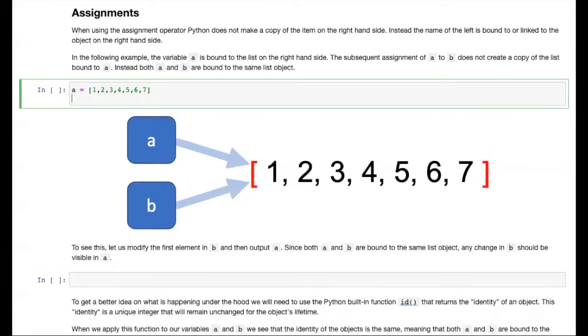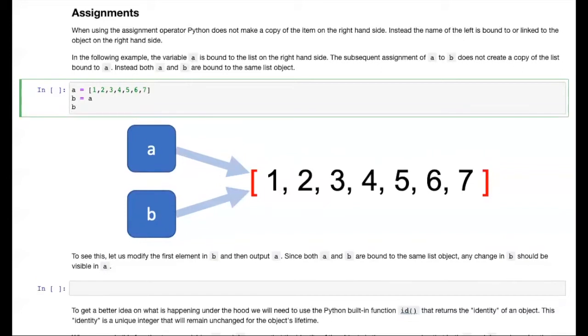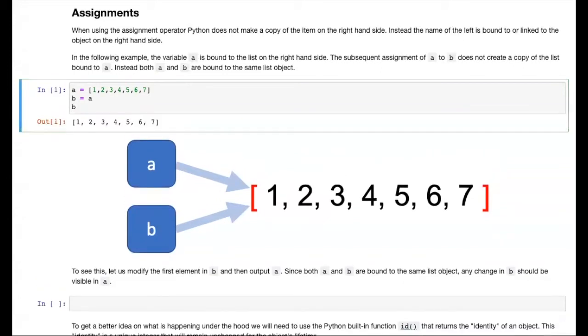So what happens when I say B equals A? Well, in this case, B is not receiving a copy of A. That is, we're not creating a new list on the right-hand side and then binding it to the name B. Instead, we're binding the name B to the same list as A, as depicted in the image below. Both A and B here point to the same list, and if we output B here, we see that this appears to be true.